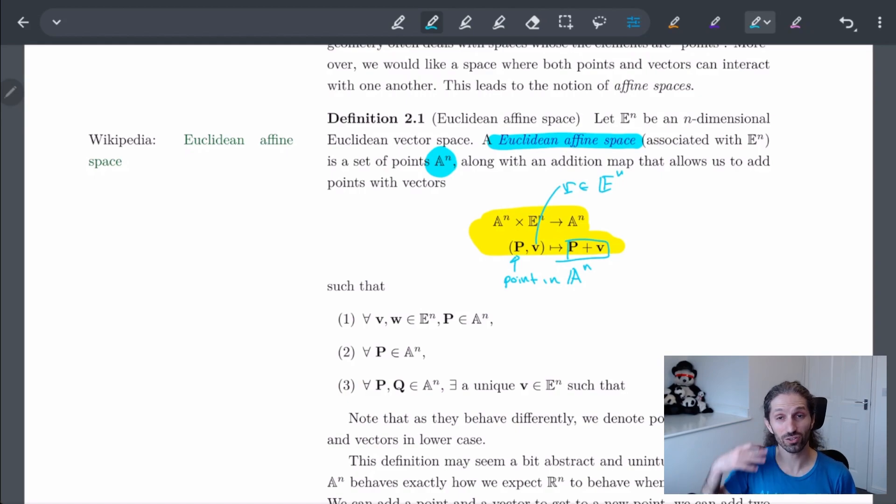But you can kind of intuitively think of this as you start off with some point P, I look at my vector V starting from that point, and the point here is the point exactly that I want. So this is intuitively the idea that we're trying to do.